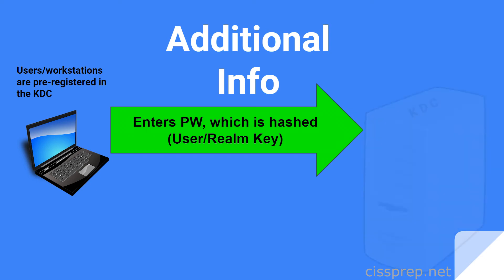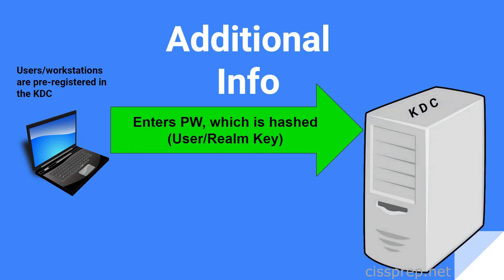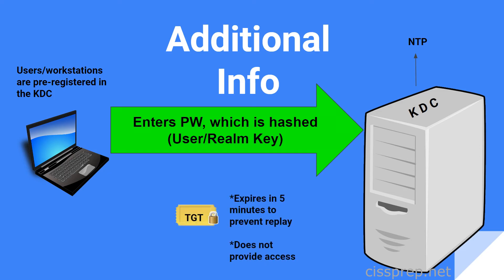Something else you'll need to know is that the KDC, or key distribution center, uses network time protocol to ensure that the timing is synchronized. The reason this is done is because the initial ticket, or the TGT — ticket-granting ticket — needs to expire within five minutes to prevent replay attacks.